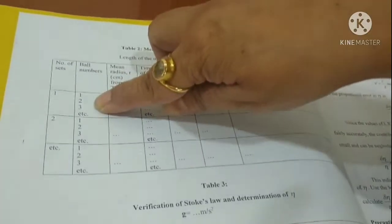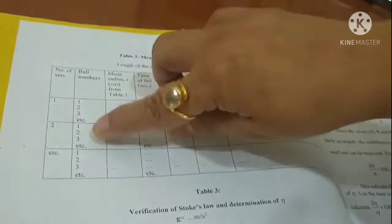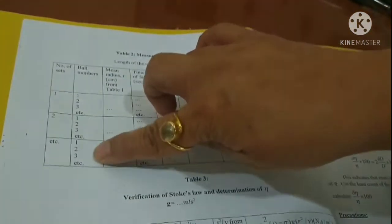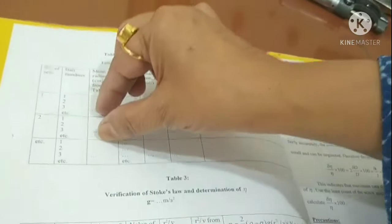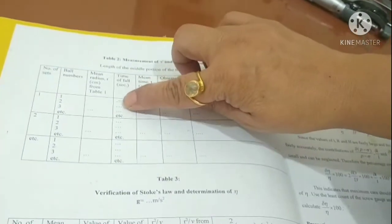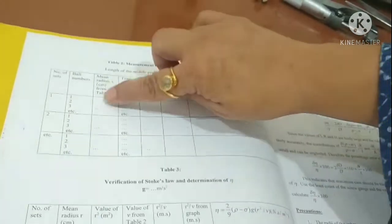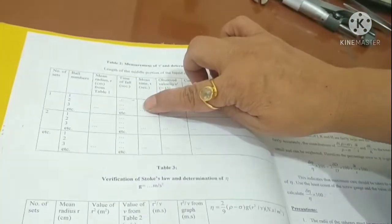After taking the readings, we fill up this table. This is one set of ball - the bigger ball, the middle size ball and the small size ball. We take the radius, mean radius of all the balls of one size here, the other size and the third size. Then we note down the time of fall of each ball of this size and then mean is taken.